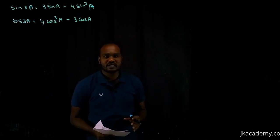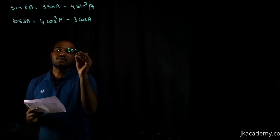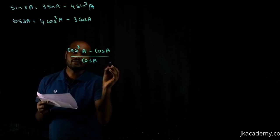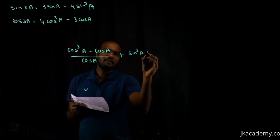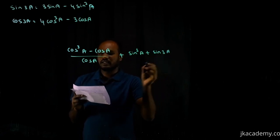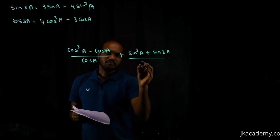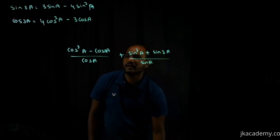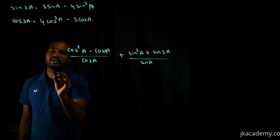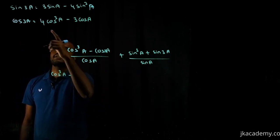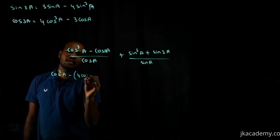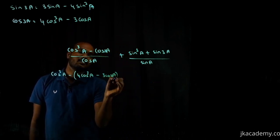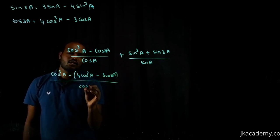Let's do one or two questions from your examination. Here is one question: (cos cube a minus cos 3a) divided by cos a, plus (sin cube a plus sin 3a) divided by sin a. What is the cos 3a formula? I know it, so I'll write: cos 3a = 4 cos cube a minus 3 cos a. I'll take the bracket, open it up in the denominator.